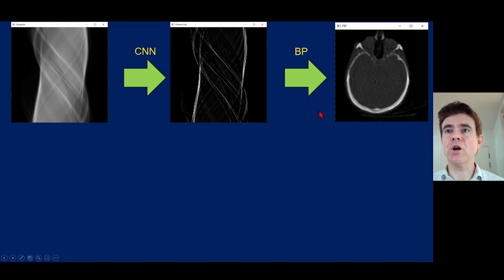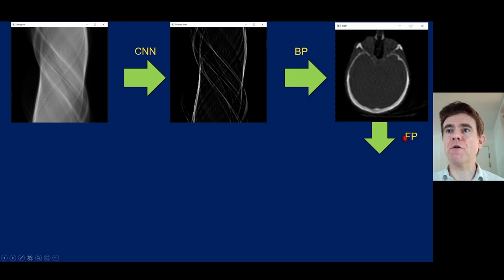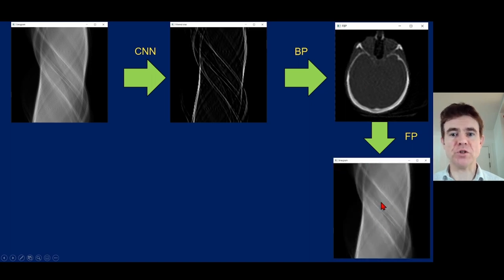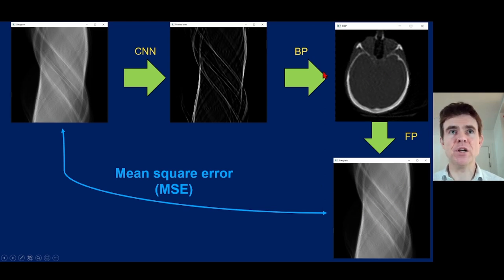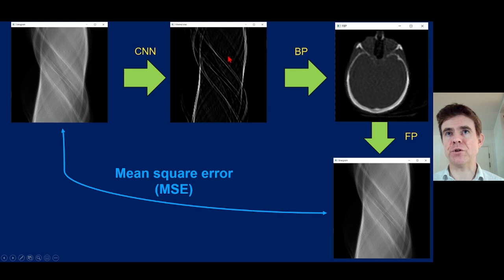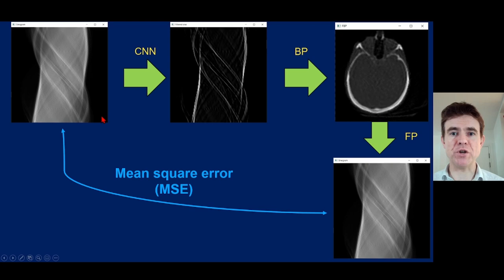How do we train up the CNN? The key is to take the current reconstruction, forward project it to give a predicted sinogram, and then look at the mean square error between the starting data and our current prediction based on our reconstruction. So we take the sinogram, apply a CNN to get a filtered sinogram, back project it, then forward project that image to get it to agree back again with the supplied data.